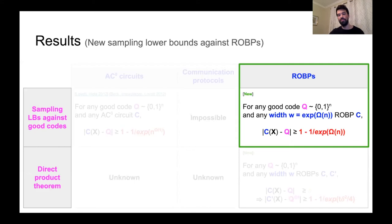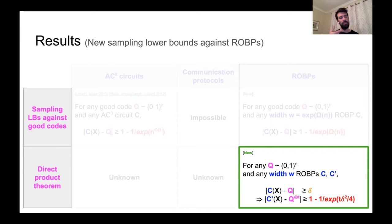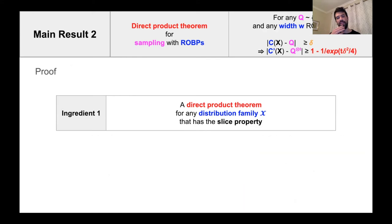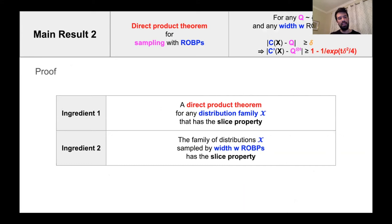Next, we give a proof sketch of our direct product theorem. Recall it says: if for any width-W ROBP the output distribution is delta-far from Q, then for any width-W ROBP the output distribution is exponentially far from Q^⊗T, where Q^⊗T is T independent copies of Q concatenated together. The proof goes via two key ingredients. The first is a more general direct product theorem for any distribution family satisfying a special so-called slice property. The second shows that the family of distributions sampled by width-W ROBPs has the slice property. Combining these two immediately gives our direct product theorem.